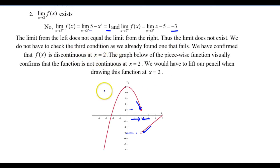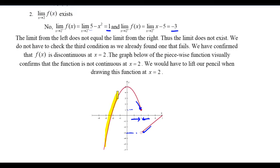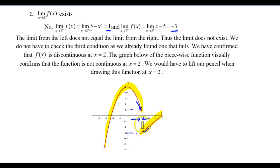The graph confirms we don't have continuity. If I start off to the left and trace this function, I don't have to leave my pencil up until I get to 2. At 2, I have to jump down and then continue drawing the rest of the function. So I am discontinuous at the point 2 on this piecewise function.